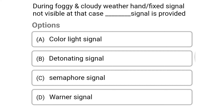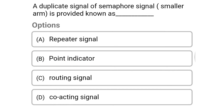Next question: during foggy and cloudy weather when the fixed signal is not visible, which signal is provided? Option A: color light signal, option B: detonating signal, option C: semaphore signal, option D: warner signal. The correct answer is option B: detonating signal.